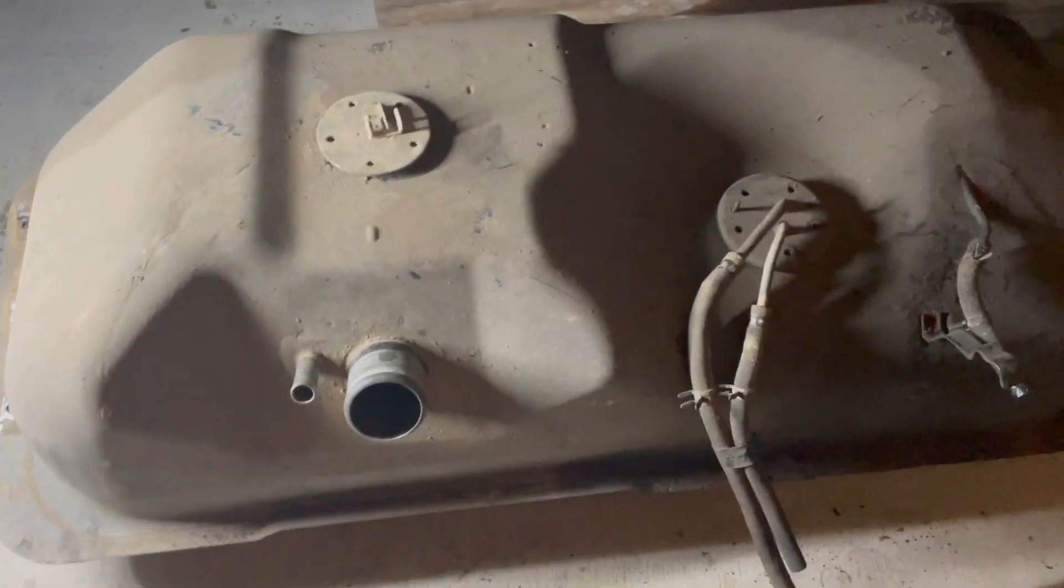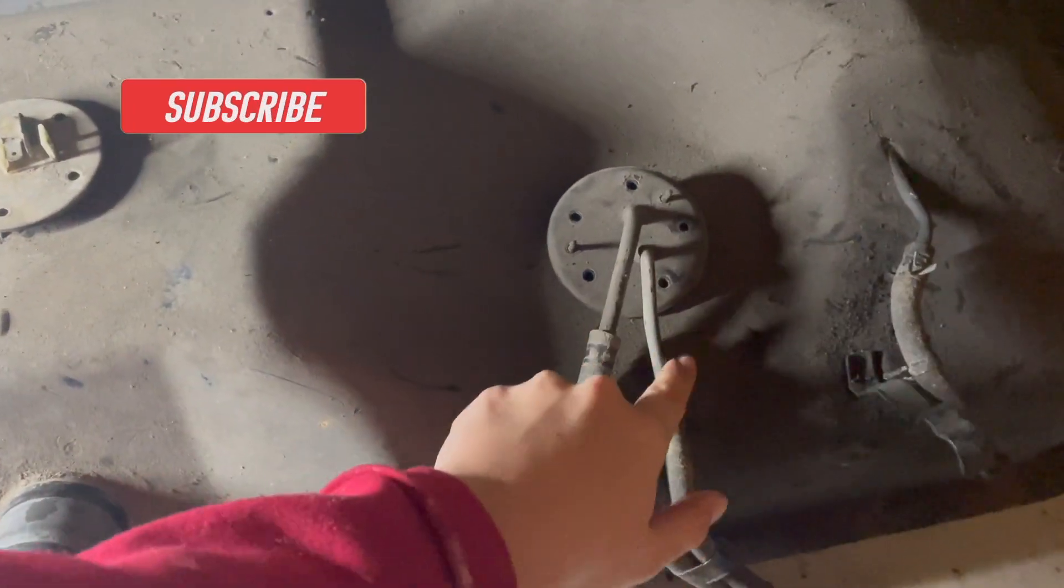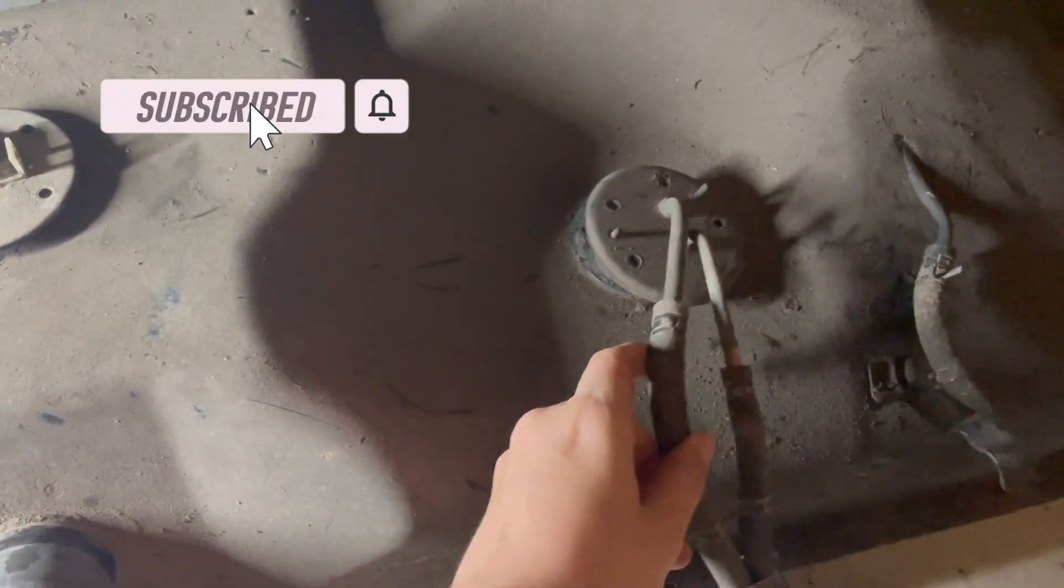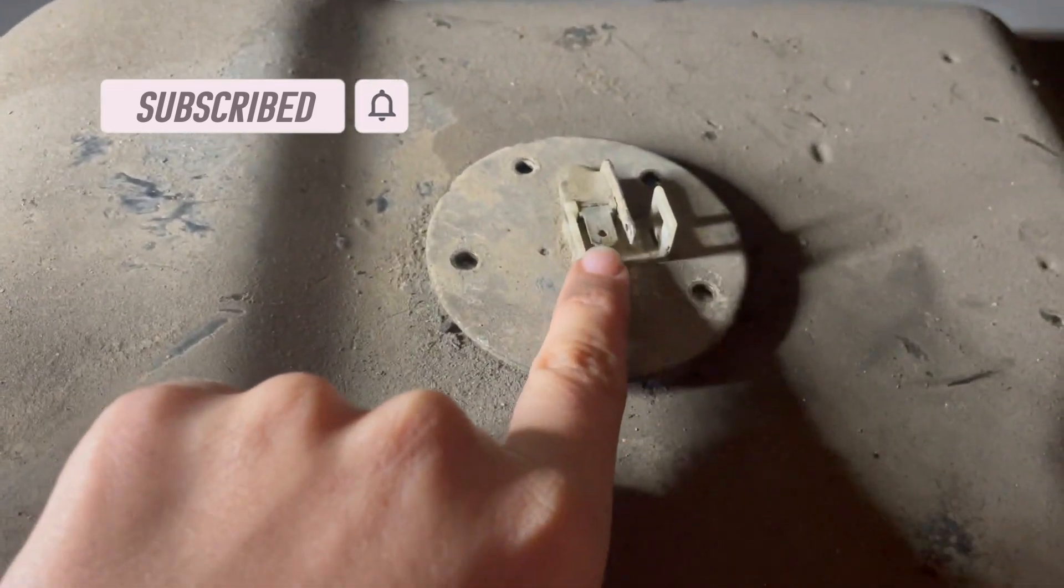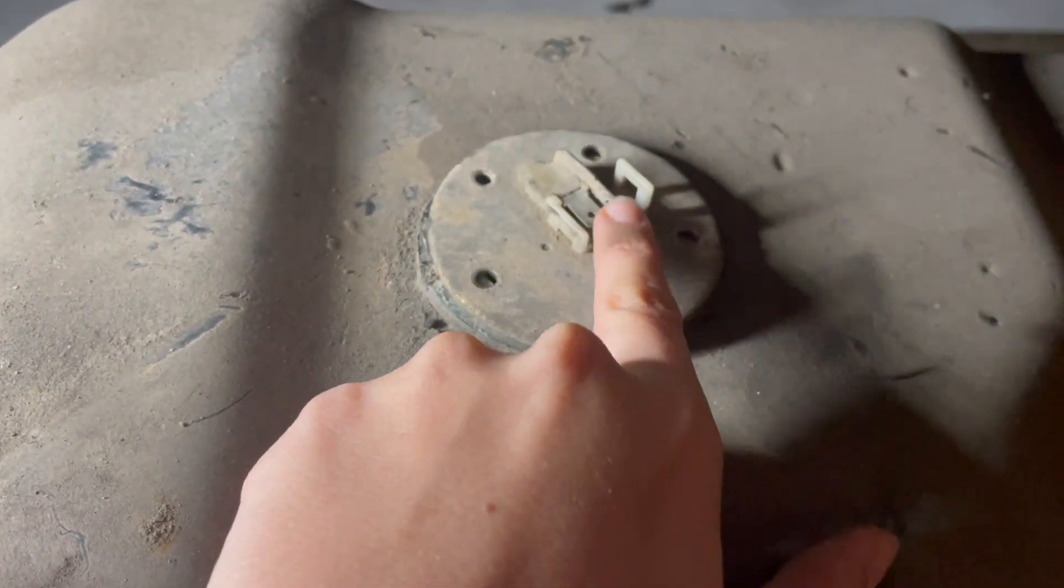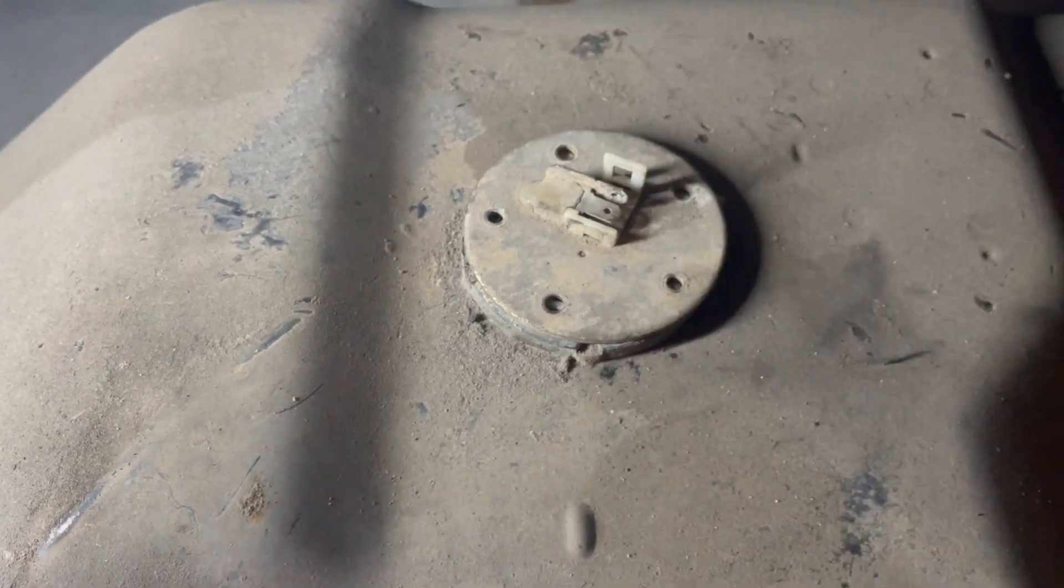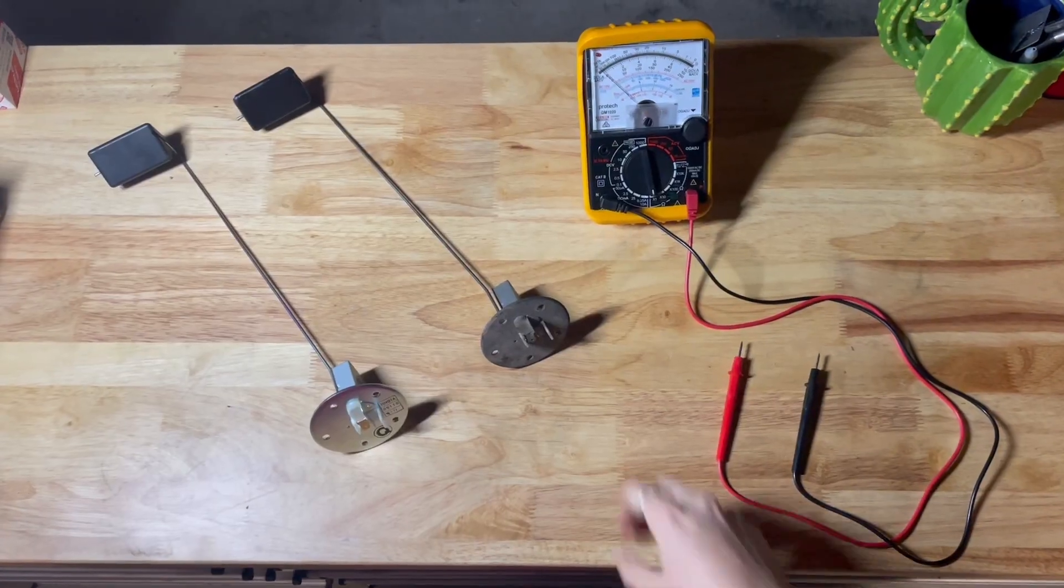First things first, how do you know which is which? This one here with the two lines coming out of it is your fuel pickup - these are your two fuel lines. Whereas this one here has two wires coming out of it, and this is what we're going to be testing today.